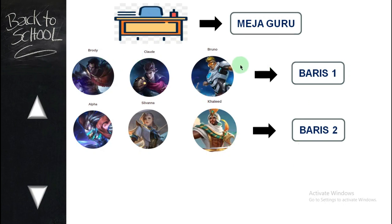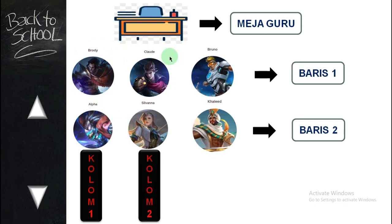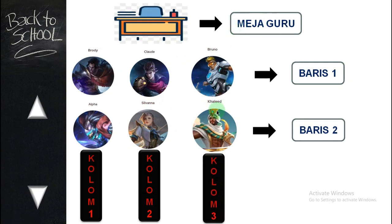Membedakan baris dan kolom. Ini jadi baris. Ingat, kalau Anda duduk, Anda berada di barisan berapa di kelas. Kemudian untuk kolom — kolom itu ke bawah. Kolom satu ada Brody dan Alfa. Untuk kolom dua ada Claude dan Silvana. Sedangkan kolom ketiga ada Bruno dan Khaled. Seumpama ini suatu matriks, saya beri angka urut: Brody itu 1, Claude 2, Bruno 3, Alfa 4, Silvana 5, Khaled 6. Ada dua baris, kolomnya tiga.